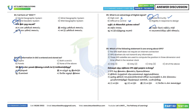Question 86: Which of the following statements is wrong about GPS? Statement 1: GPS itself does not require an internet connection — correct. Statement 2: GPS receivers do not transmit any information — correct. Statement 3: Three GPS satellites are used to compute position in three dimensions and time offset — this is wrong; it should be four satellites. So option C (statement 3 only) is the wrong statement.